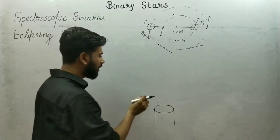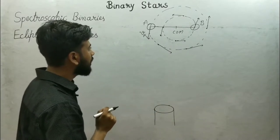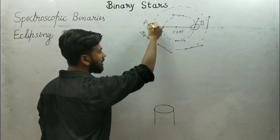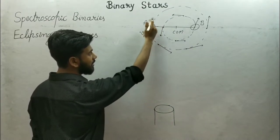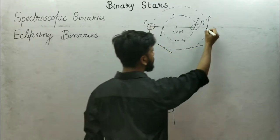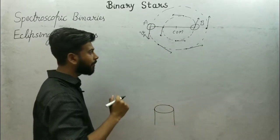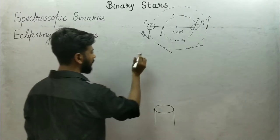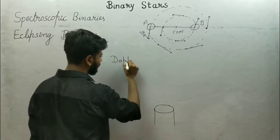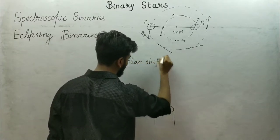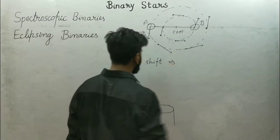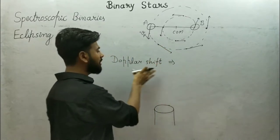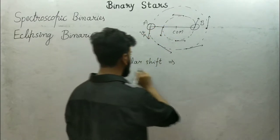We don't know what the velocity is — we just observe from here. When the star is at this position, the star is coming towards us. At this other location, the star is going away from us. Now we recall the Doppler shift.